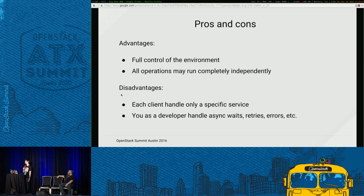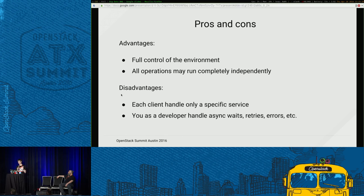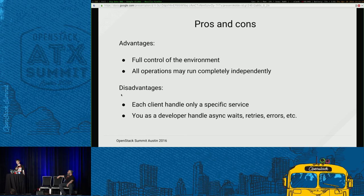This direct client approach has advantages — you get full control and access to all the possible options these clients expose, and you can run operations sequentially and independently. But the drawbacks are also obvious: each client has access to only a specific service and is not aware of cross-service issues. For example, while polling the Sahara cluster for status, you might not know that Neutron has failed to create a network until the cluster fails. So the developer has to handle everything: asynchronous waits, retries, and error handling for each client.